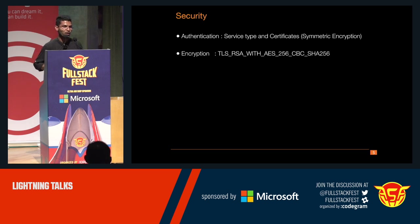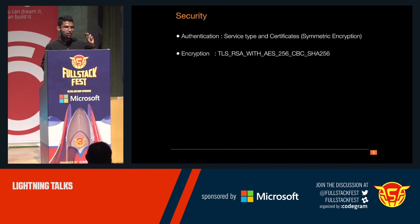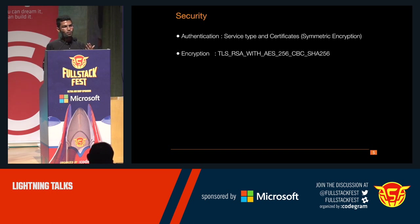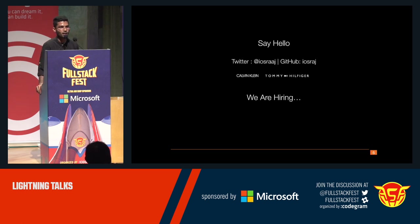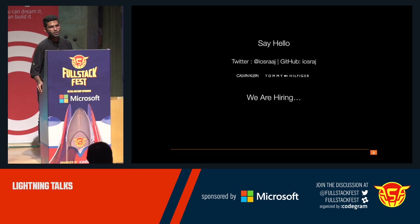For security — which is of utmost importance — we use symmetric authentication as well as an encrypted user transmitter ID. The channel we use is TLS RSA with AES-256, one of the most encrypted channels available. We make sure all information transferred is secured, so employees feel confident that nobody is overseeing the network. You can connect with me on Twitter and GitHub. We are also hiring. Thank you to my team for encouraging me to give this talk.